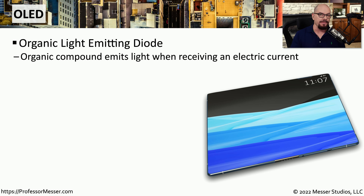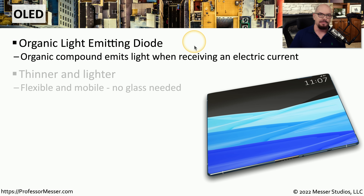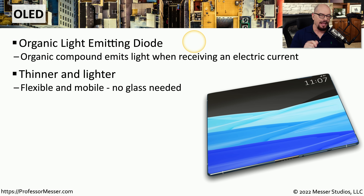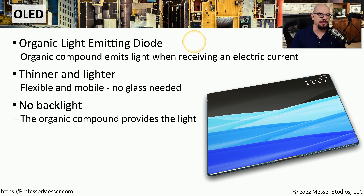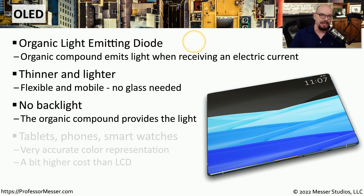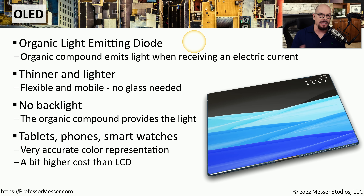If you have a newer device, you may be using an OLED display. OLED stands for organic light emitting diode, and it doesn't have a backlight. Instead, the organic material emits light when provided with a current. Because there's no backlight and no liquid crystals, these are very thin displays with no glass needed on the front for protection. That organic material creates its own light from power, allowing these displays to be very light and very thin. You'll find them on tablets, phones, and smart devices, not only for their great color representation, but because they're so light and easy to carry.